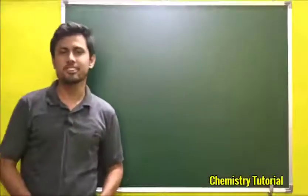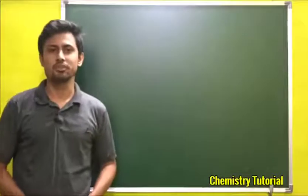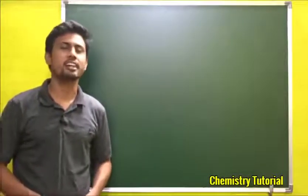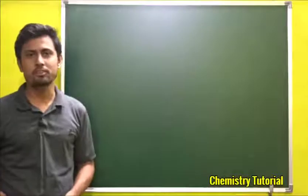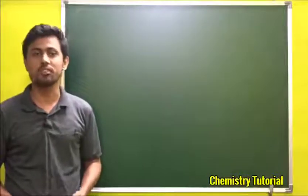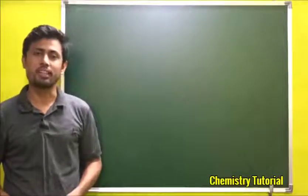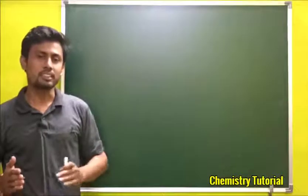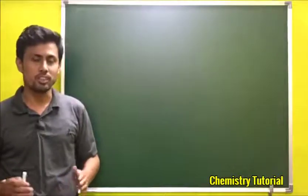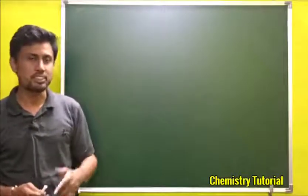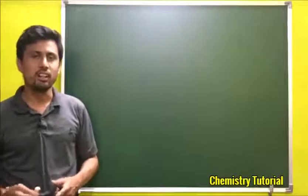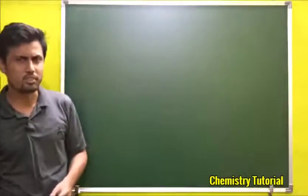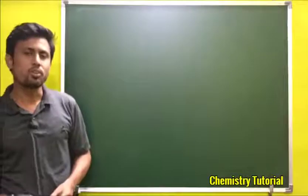Hello everyone, this is Donjit Dekaya and you are watching my YouTube channel Chemistry Tutorial. In the last video we discussed about the Schrödinger equation of the hydrogen atom, specifically how we can separate the Schrödinger equation into three parts: the radial, polar, and azimuthal parts.